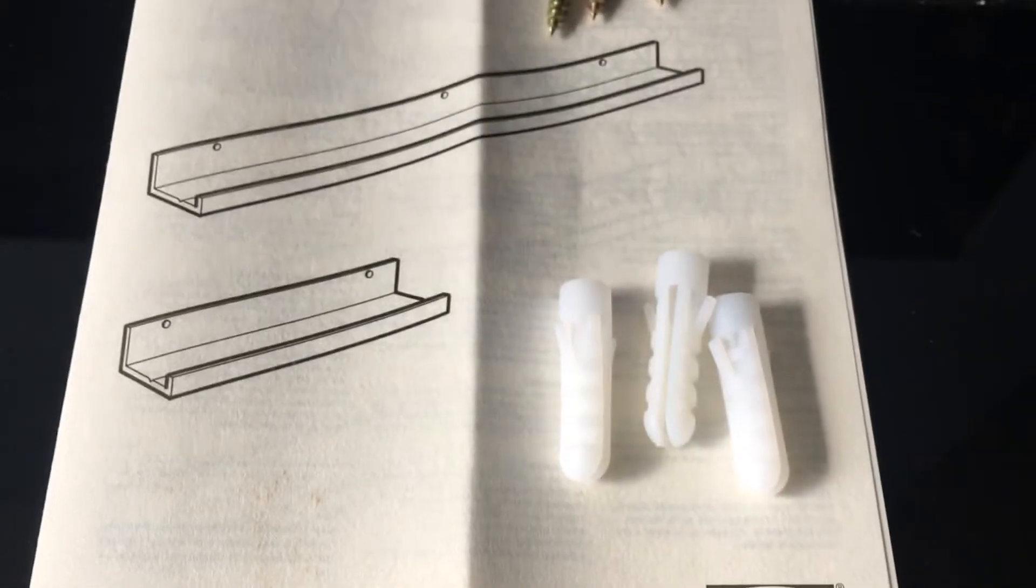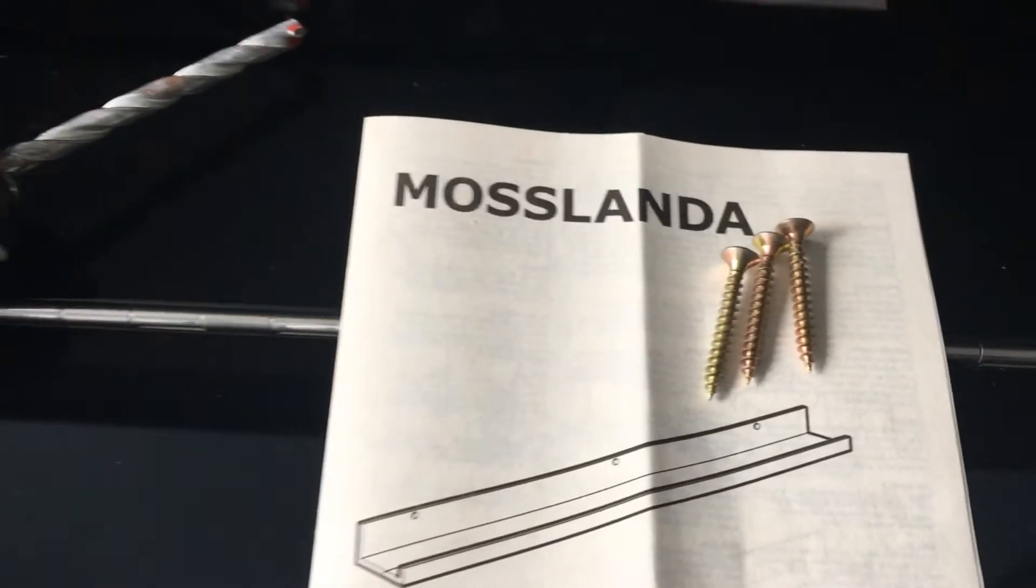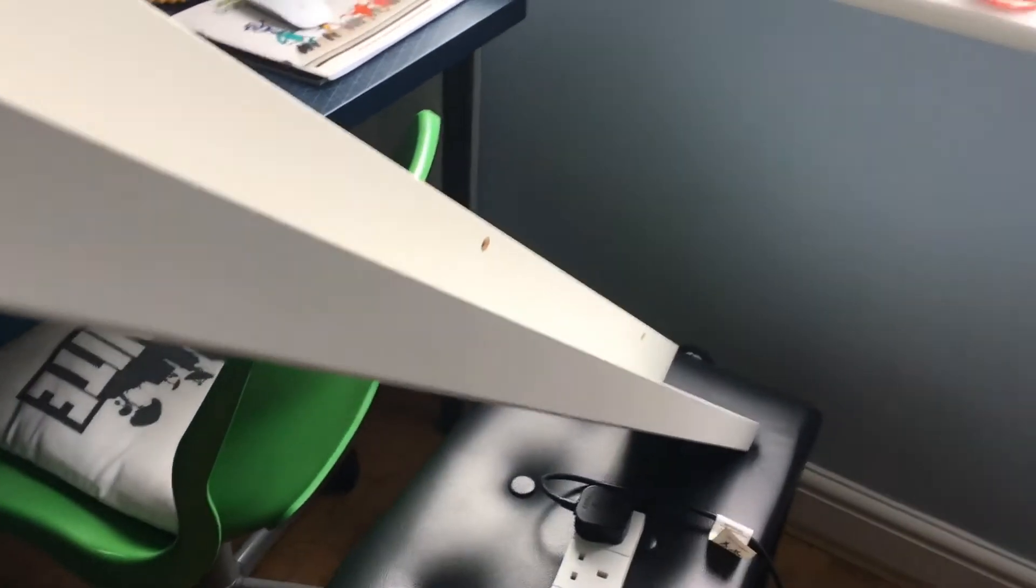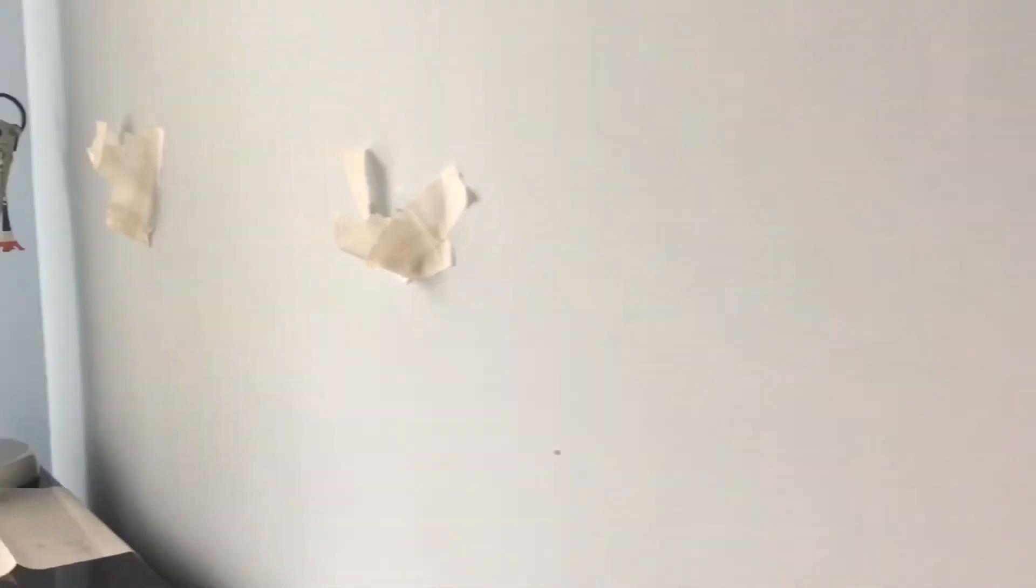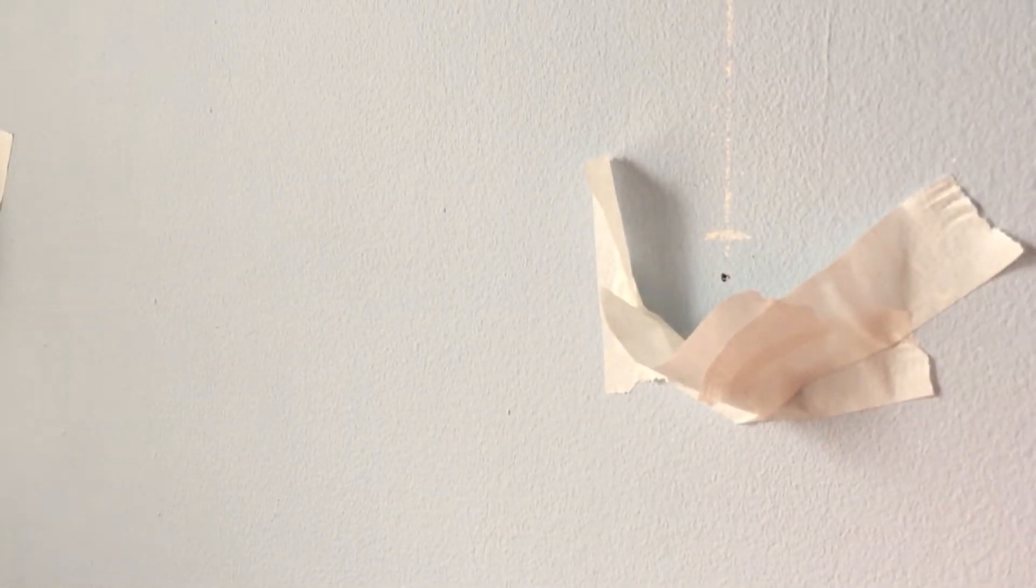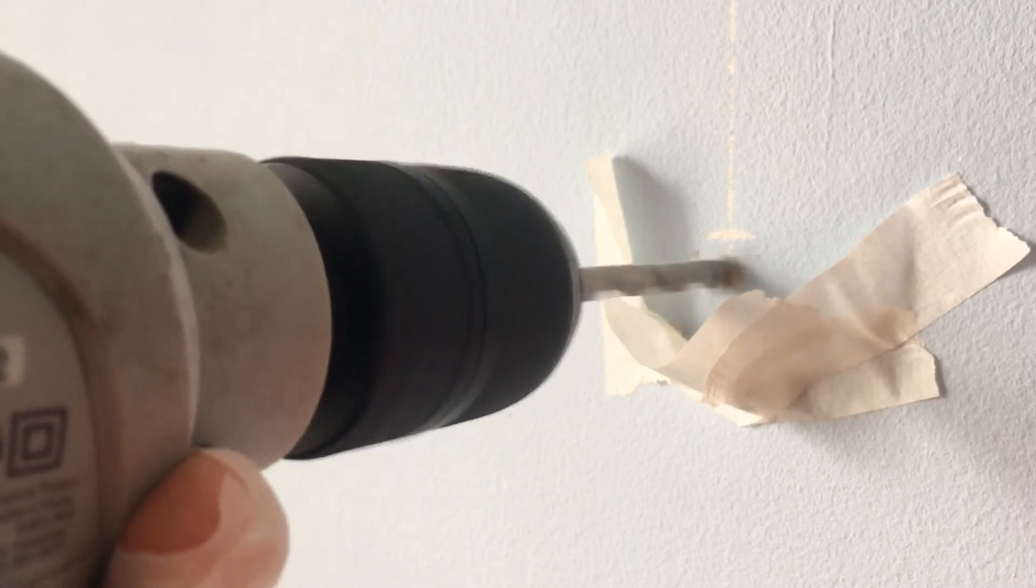And now let's just say a few words about the picture ledge itself. Like I mentioned already, we bought it from Ikea and it's in white color. They don't provide any wall plugs or screws to attach to the wall, so you need to get them yourself. But anyway, the picture ledge is 115 centimeters long and the depth is 12 centimeters, so it is rather deep.